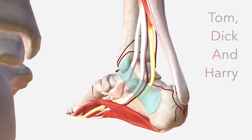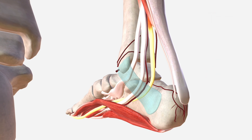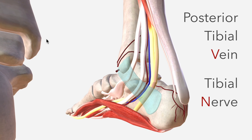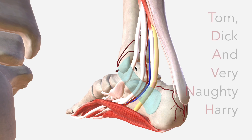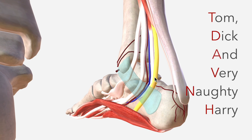Let's add in a couple more relations: the posterior tibial vein and the tibial nerve. If you want to take things a step further, you can go Tom, Dick, and Very Naughty Harry — the V and the N standing for the posterior tibial vein and the tibial nerve.